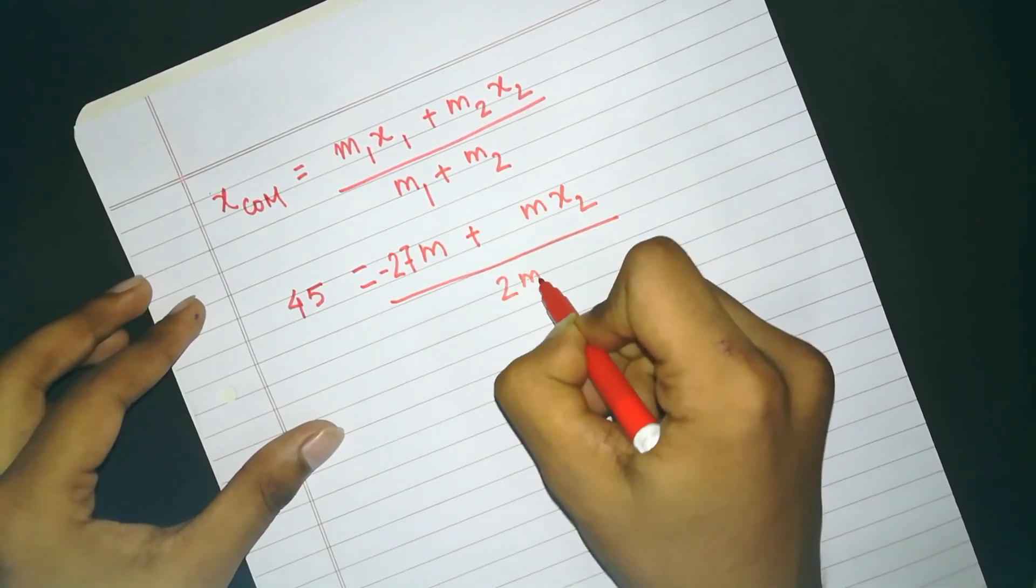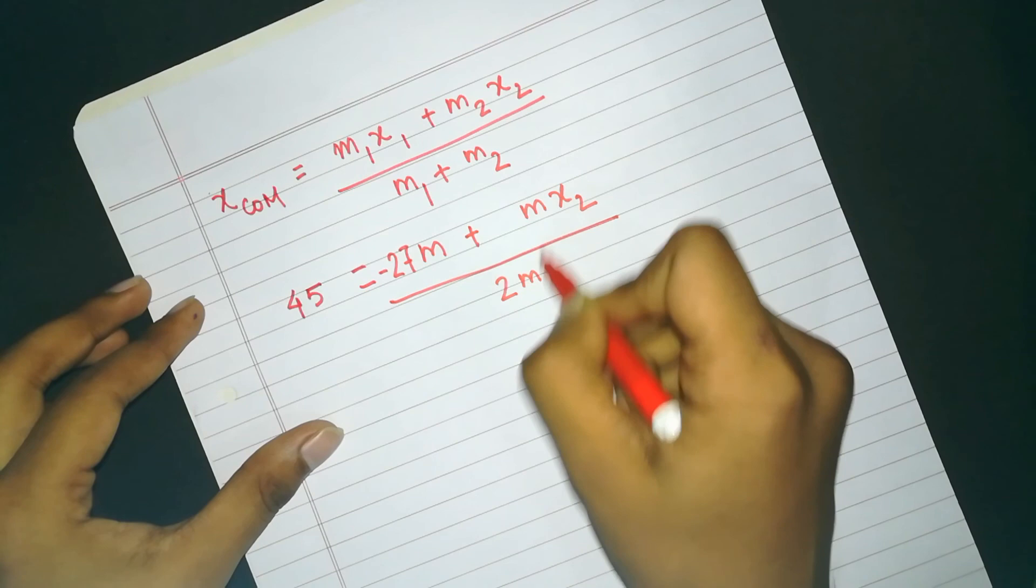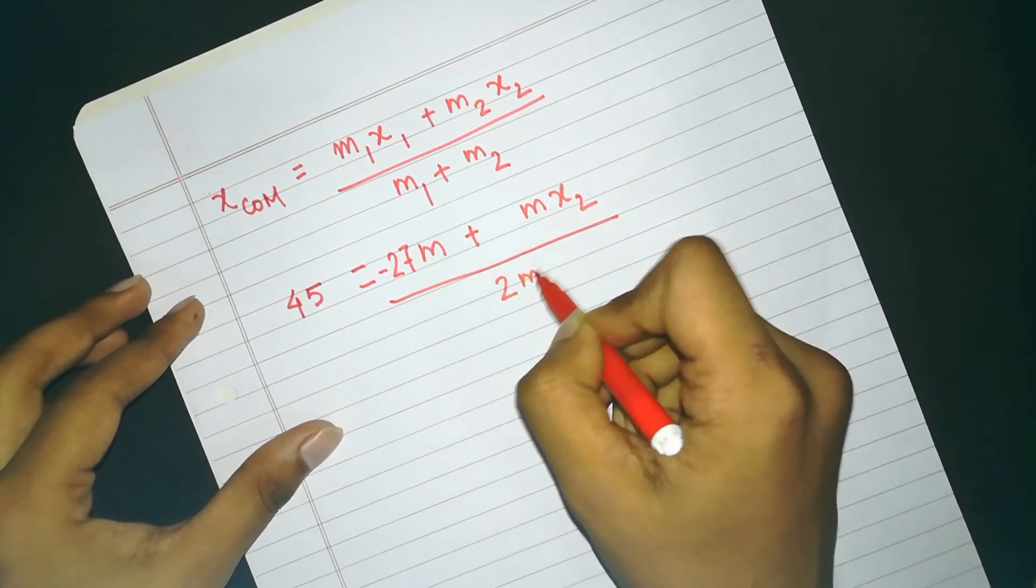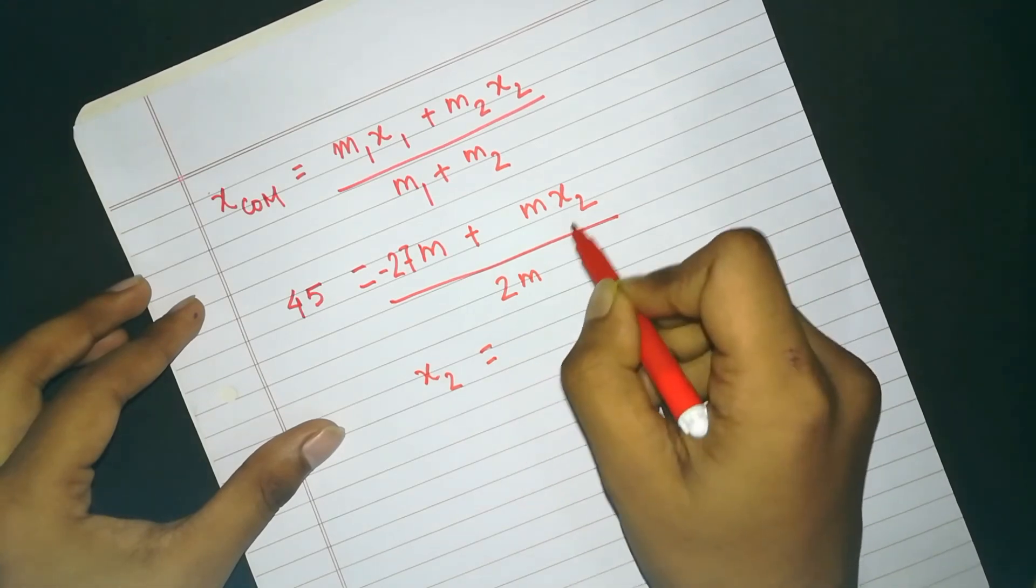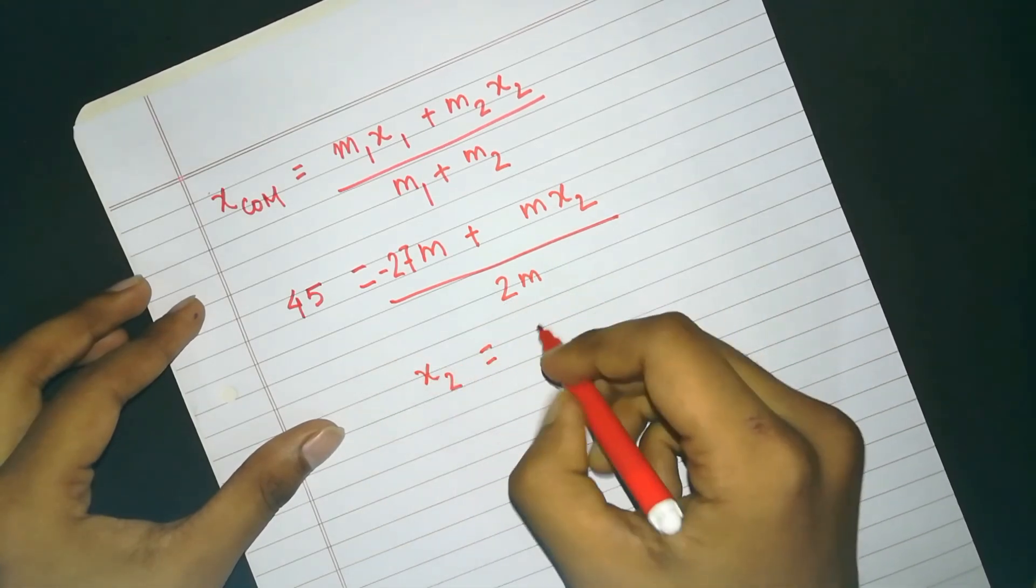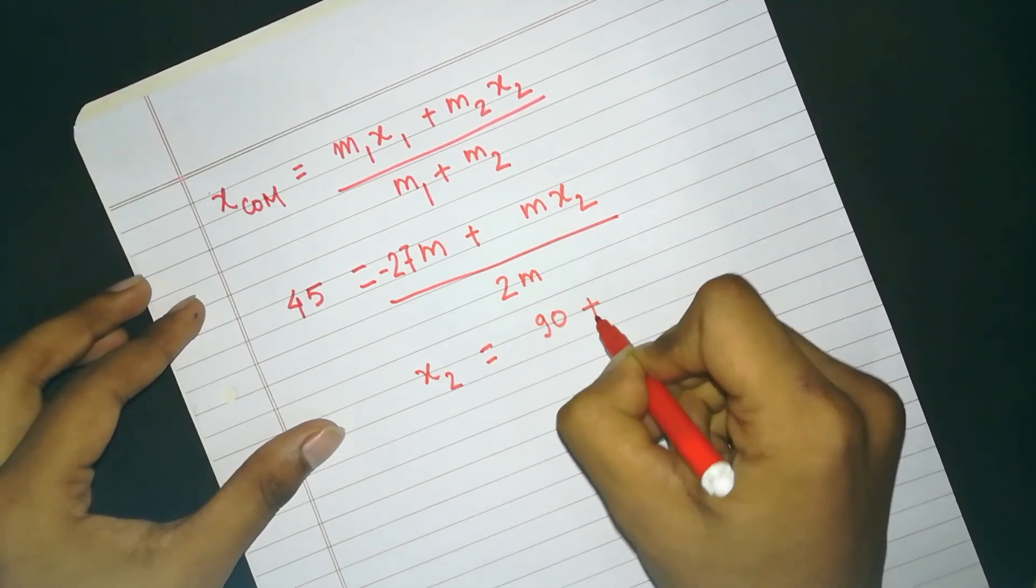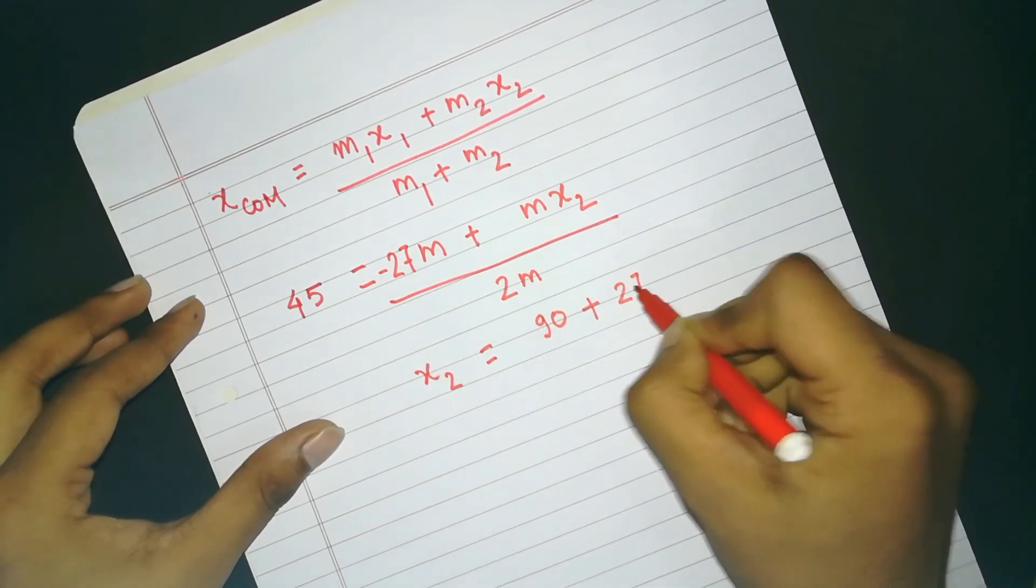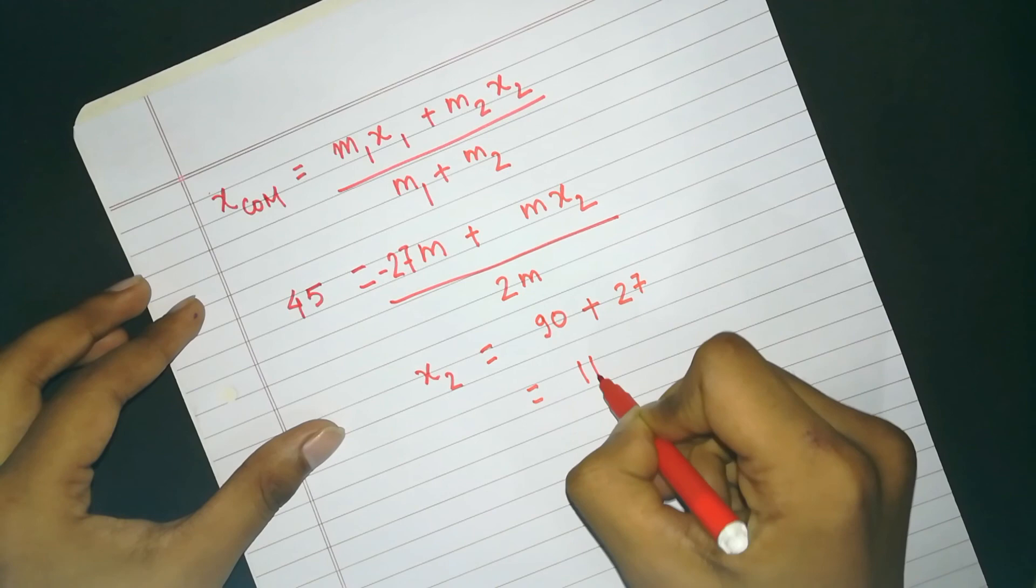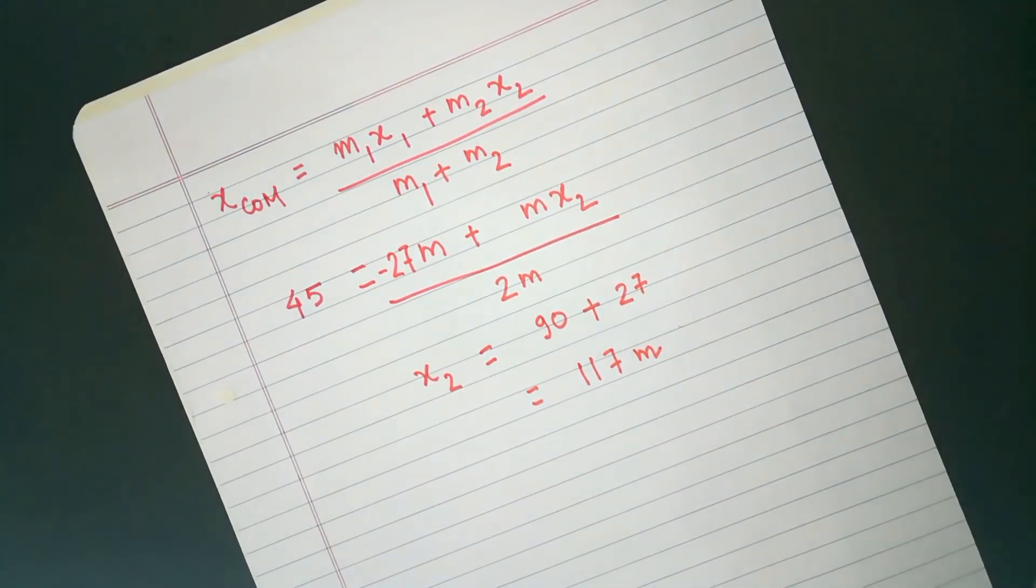And M1 plus M2 becomes 2M again. And from here again, M will cancel from numerator and denominator. And we can solve for X2 like 45 multiplied by 2, 90 plus 27 goes to LHS. It becomes positive. 90 plus 27, it becomes 117 meters. So that's the solution: 63 meters and 117 meters. That's, you can see, it is in option D.